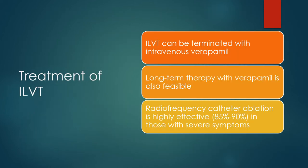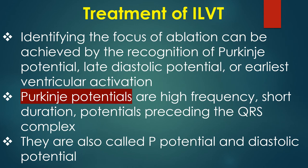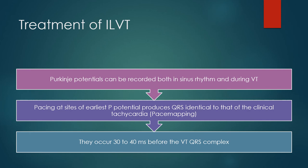ILVT can be terminated with intravenous verapamil and long-term therapy with verapamil is also feasible. Radiofrequency catheter ablation is highly effective in those with severe symptoms. Identifying the focus of ablation can be achieved by recognition of Purkinje potential, late diastolic potential, or earliest ventricular activation. Purkinje potentials are high-frequency short-duration potentials preceding the QRS complex, also called P potential and diastolic potential. They can be recorded in both sinus rhythm and during VT. Pacing at sites of earliest P potential produces QRS identical to that of clinical tachycardia, occurring 30 to 40 ms before the VT-QRS complex.